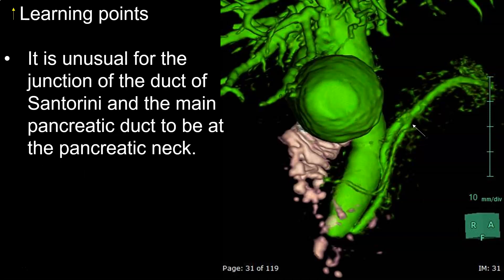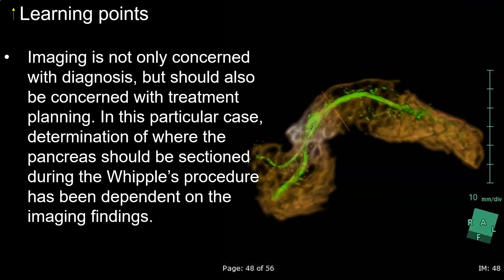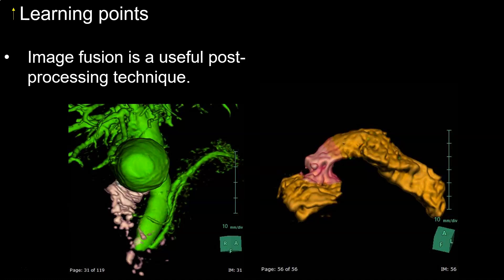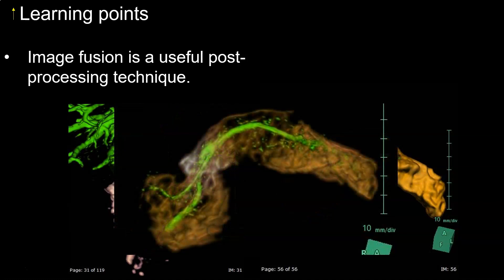It is quite unusual for the junction of the duct of Santorini and the main pancreatic duct to be at the pancreatic neck. Imaging is not only concerned with diagnosis but should also be concerned with treatment planning — in this particular case, determination of where the pancreas should be sectioned during the Whipple's procedure was dependent on the imaging findings. Image fusion is a useful post-processing technique: the junction of the anomalous ducts is well seen on the MRCP but the pancreatic parenchyma is not, and the pancreatic parenchyma is seen on the T1-weighted MRI but the pancreatic duct junction point is not seen — so image fusion could solve the problem.